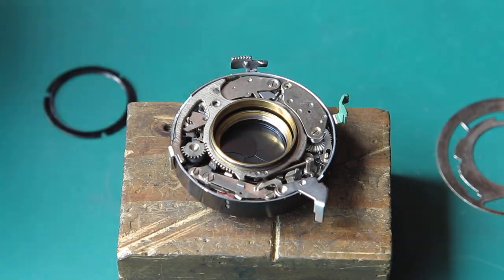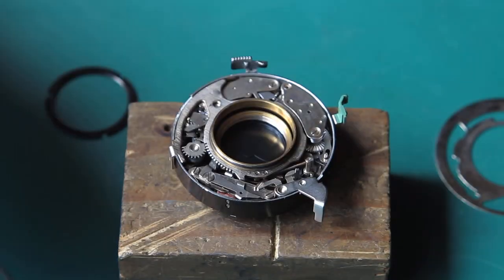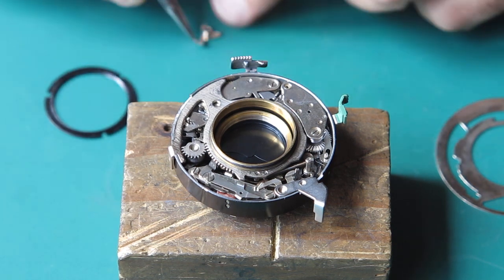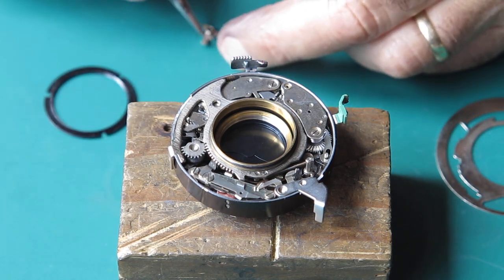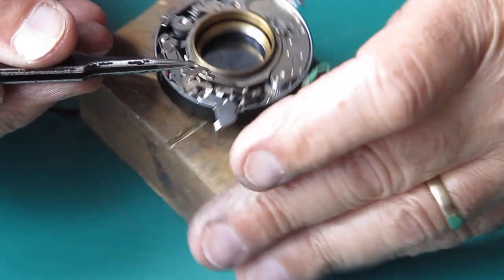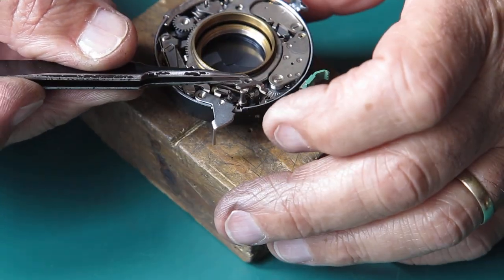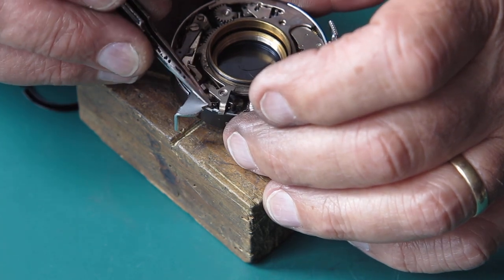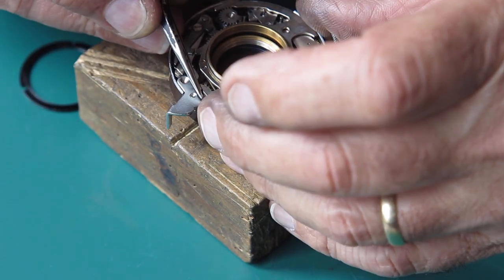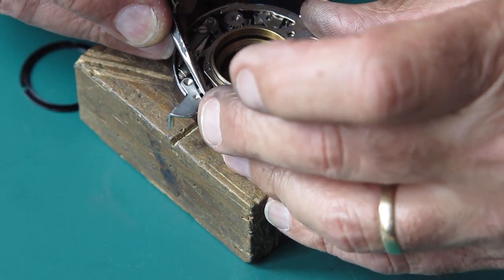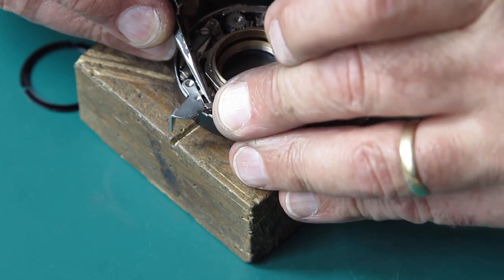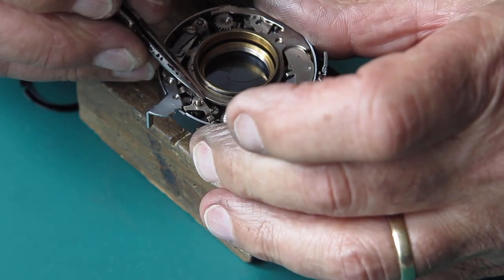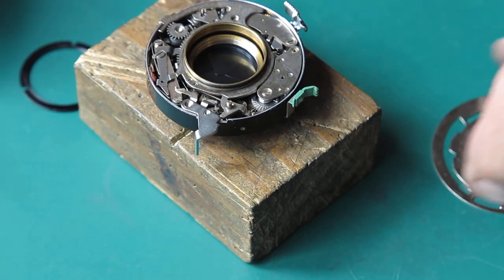So next thing to do is put this little latch in place. And this little latch's job is to stop you from being able to press the shutter release if the shutter's not actually cocked. So let's hold that spring back and rotate this. Make sure it's - yeah, that's good. That's all under tension.